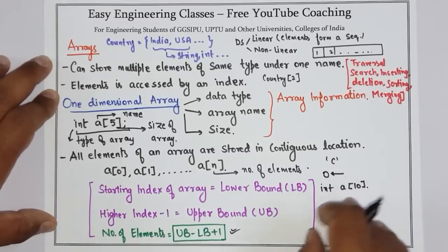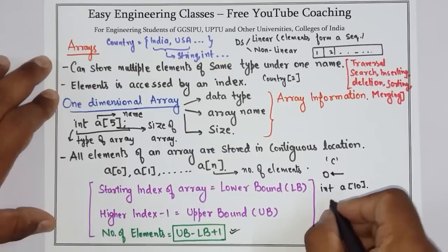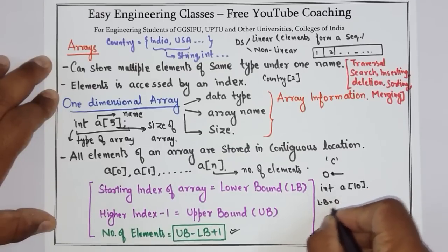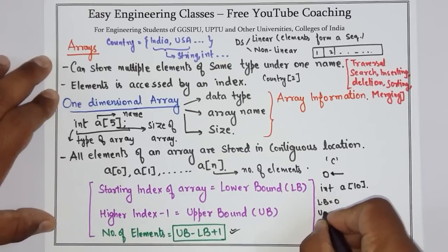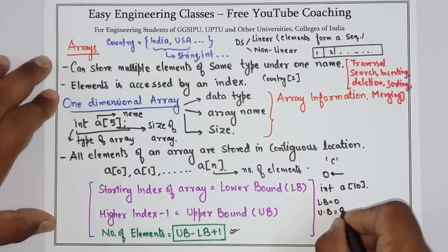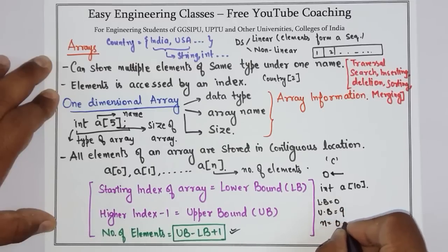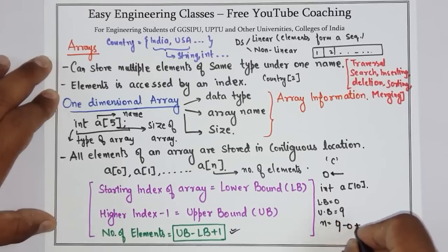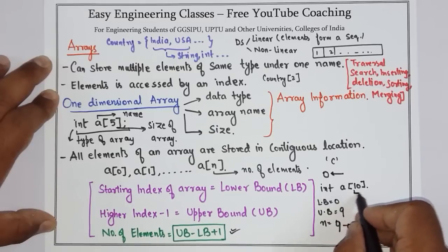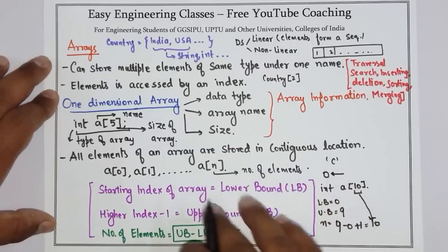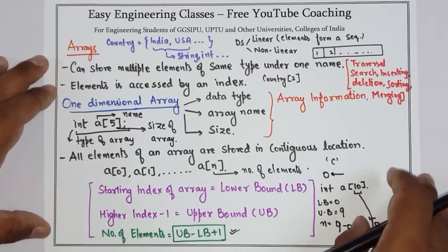then how can we find the number of elements? The lower bound will be zero, and the upper bound will be nine. So the number of elements is nine minus zero plus one, which equals ten. As you can see, it is matching. In this way you can find the number of elements in an array.